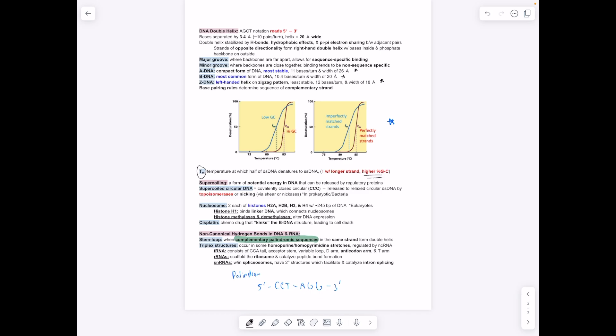For supercoiling, it's important to remember that you're going to wrap DNA around nucleosomes. Positive supercoiling is more supercoiling, negative is less supercoiling and therefore easier to transcribe or replicate.